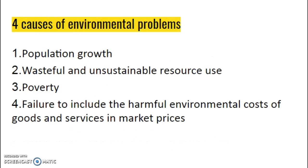There are four primary causes of environmental problems: too many people, we waste, we're too poor, and we don't pay for the harmful costs to the environment built into goods and services. For example, the price we pay for electricity doesn't reflect the amount of carbon dioxide, nitrates, and sulfates that have to be pulled out of the atmosphere. That's an example of what's called an implicit cost — it's built into the product but not necessarily built into the price.